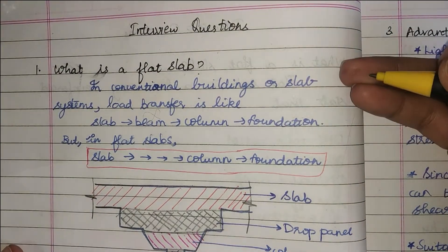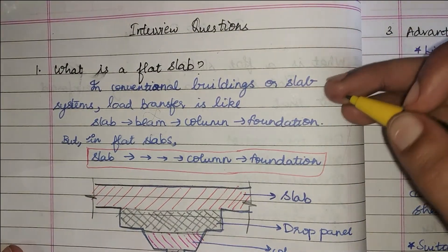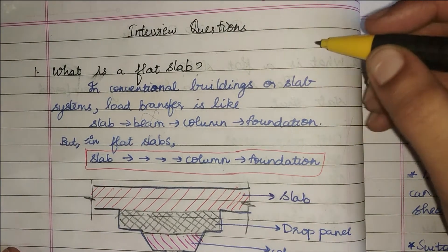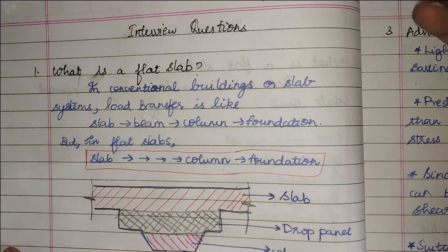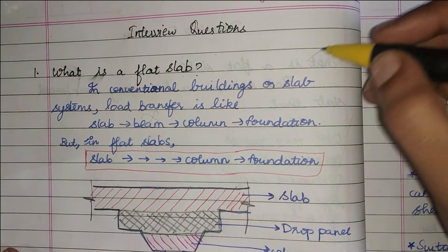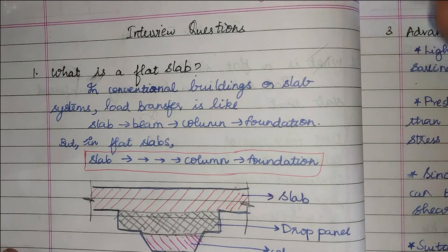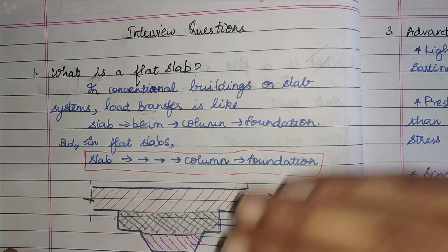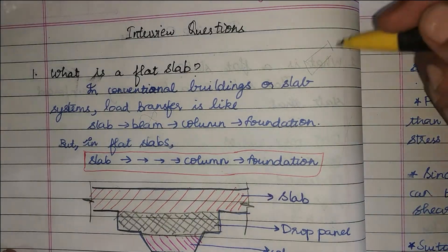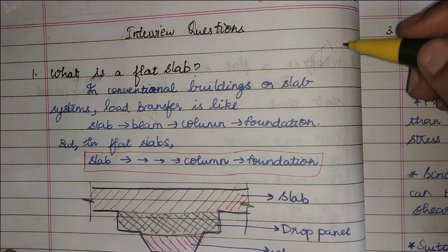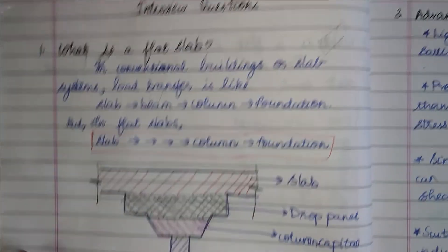Flat slabs are commonly found in underground parking systems. In underground parking, the basement height is already very limited, and if beams were used they would be heavily reinforced due to carrying large loads being at the lowermost part of the building. To avoid this, we go for flat slabs.